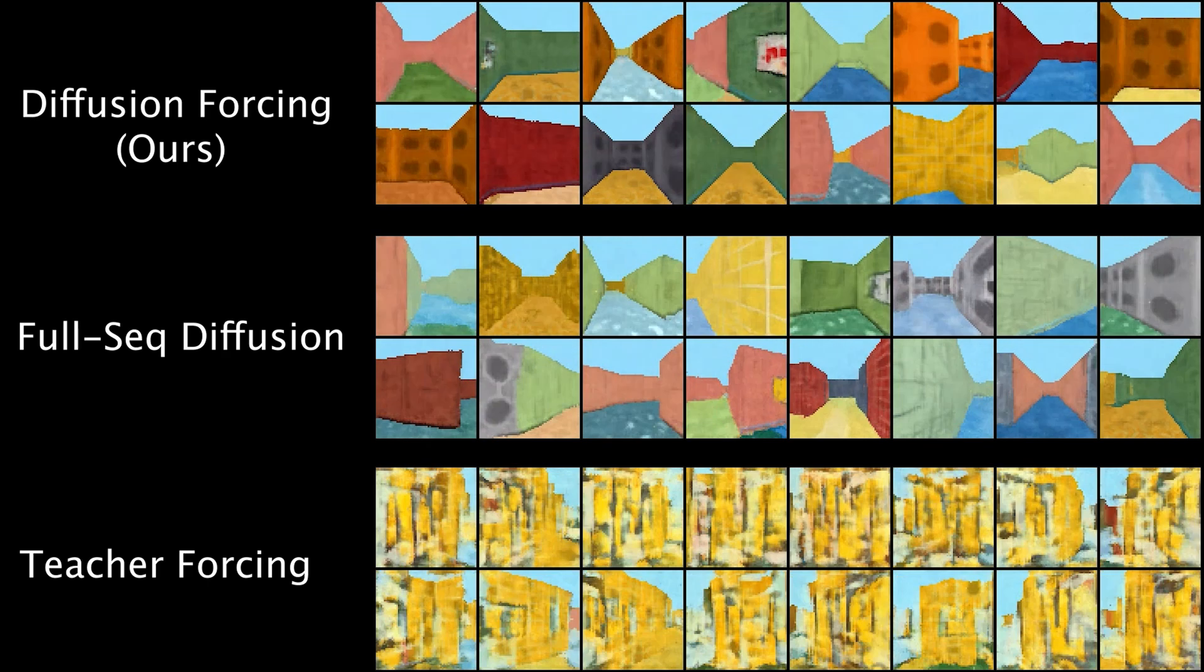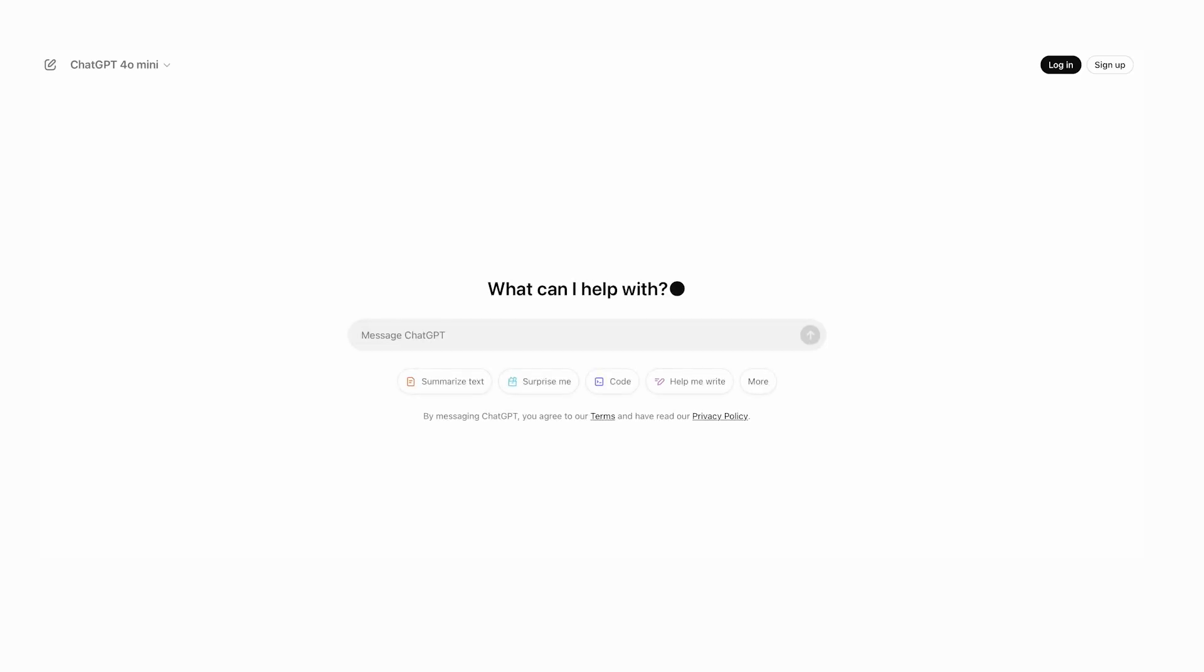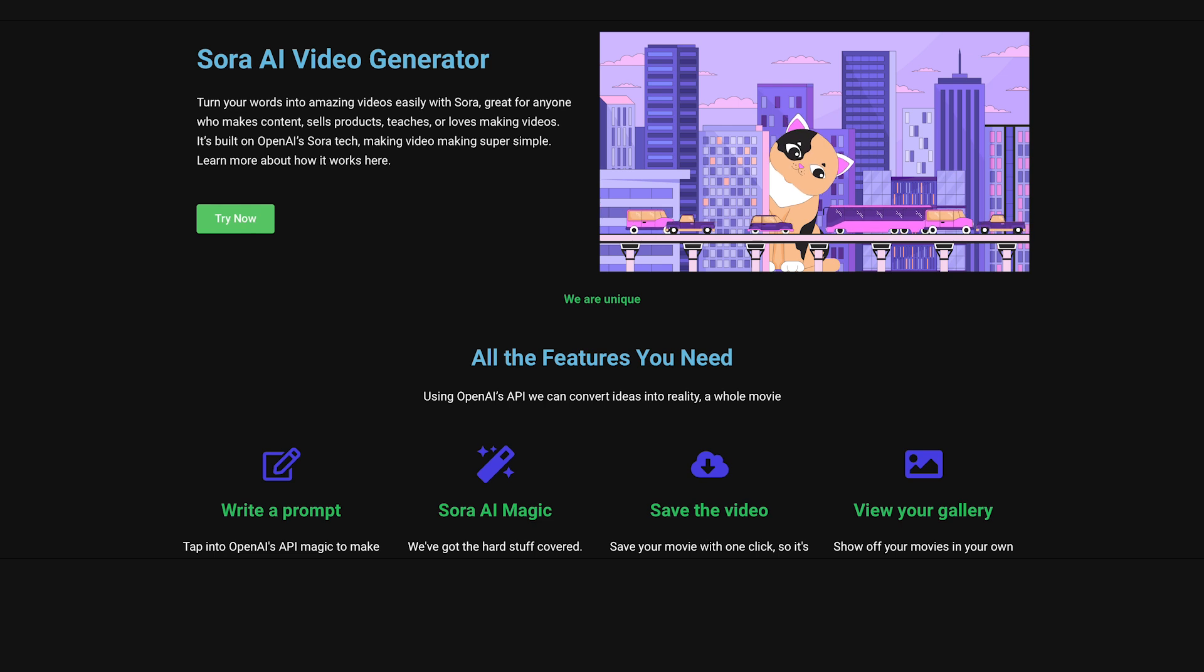Specifically, diffusion forcing is combining the strengths of two kinds of models that are around today: one is models like ChatGPT, which we call next token prediction models, and the other ones are models that generate videos like Sora, which we call video diffusion models.